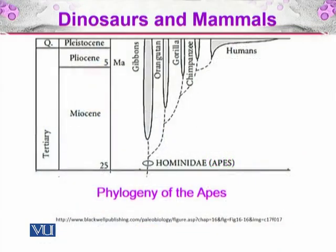Here you can see the phylogeny of apes — the Hominidae, which are the human-like organisms. First, the gibbons and orangutans, the gibbons of Southeast Asia, diverged earliest at 25 to 20 million years ago during the Miocene and parted their ways to Southeast Asia. Orangutans followed their way. And then there come the gorilla and chimpanzee, leading to the humans, which we will be discussing.